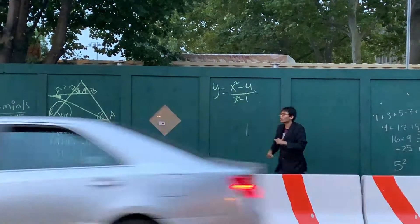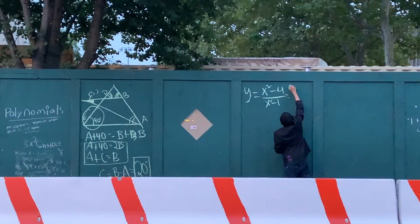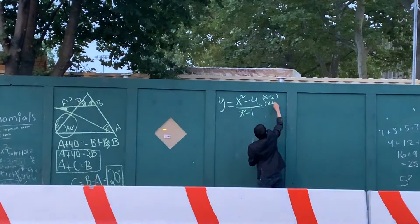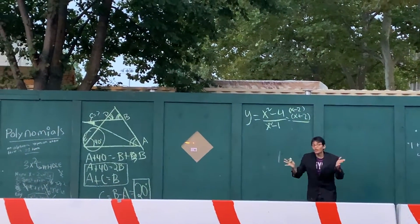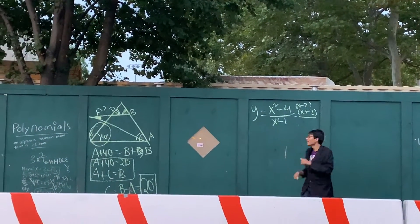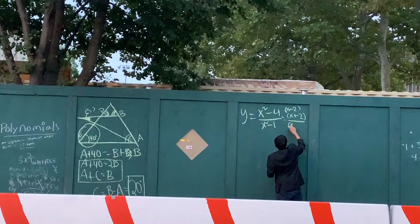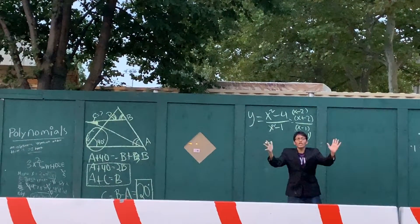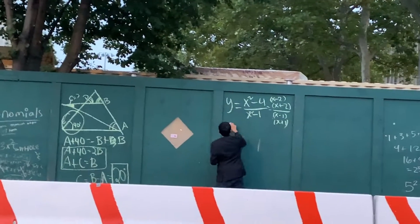I've broken down the function's numerator into (x minus 2)(x plus 2), and the denominator into (x minus 1)(x plus 1). Now we're going to go ahead and find, first and foremost, the vertical asymptotes.